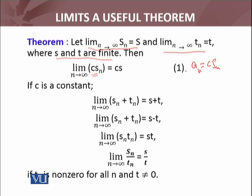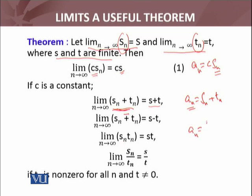...then the limit of the new sequence C·Sn equals C multiplied by the limit S. If we have a new sequence An whose nth term is Sn plus Tn, this new sequence will always be convergent and it will converge to S plus T, the sum of the limits. Similarly for the difference, it will converge to S minus T.